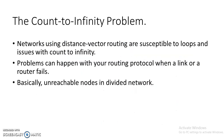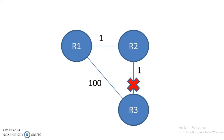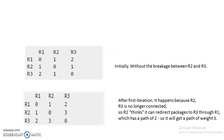The major drawback of this protocol is the count to infinity problem. Networks using distance vector routing are susceptible to loops and issues with count to infinity. Problems can happen with your routing protocol when a link or router fails — basically unreachable nodes in a divided network. This is an example of it.